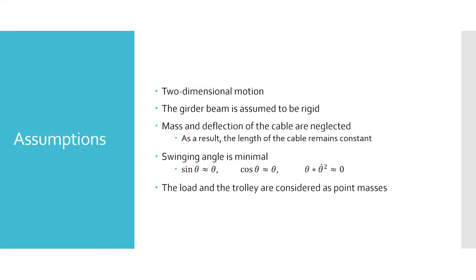To begin the analysis of this problem, some assumptions need to be made in order to make the calculations more manageable. Let us assume two-dimensional motion, the girder beam is rigid, and the mass and deflection of the cable are negligible.